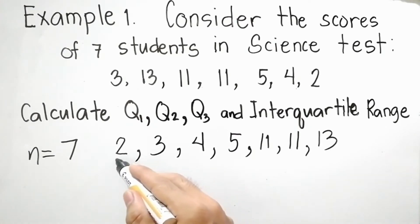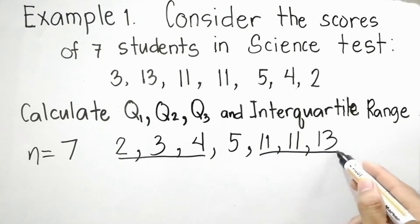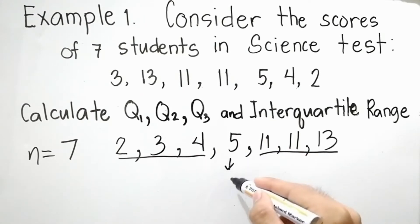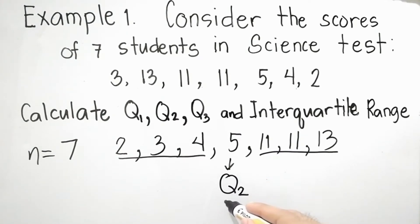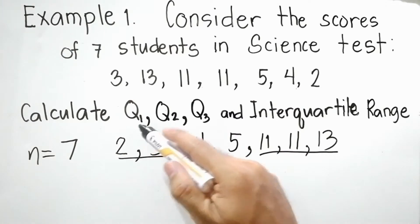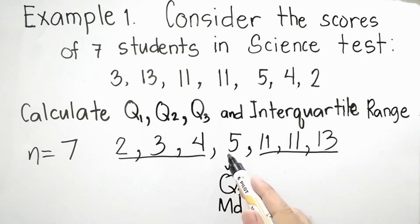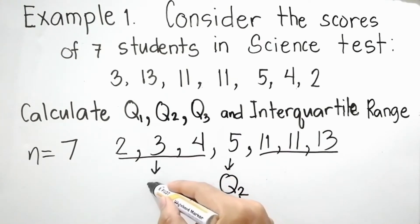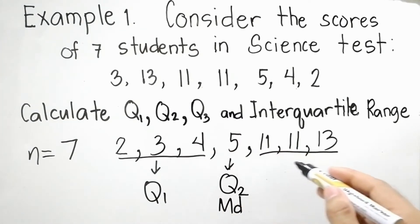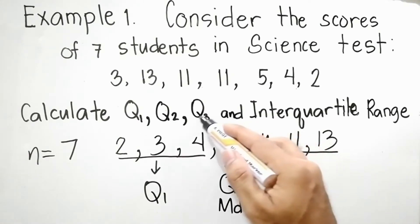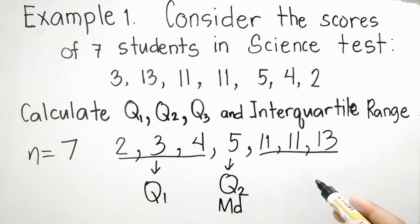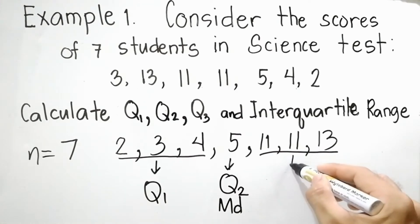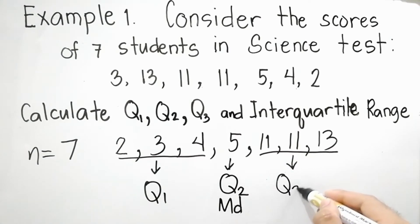With the data arranged, we can separate the values to identify Q2. The middle value is 5, so Q2 = 5. For Q1 (the lower quartile), looking at the left side of Q2, the values are 2, 3, 4 — the middle value is 3, therefore Q1 = 3. For Q3 (the upper quartile), looking at the right side, the values are 11, 11, 13 — the middle value is 11, therefore Q3 = 11.